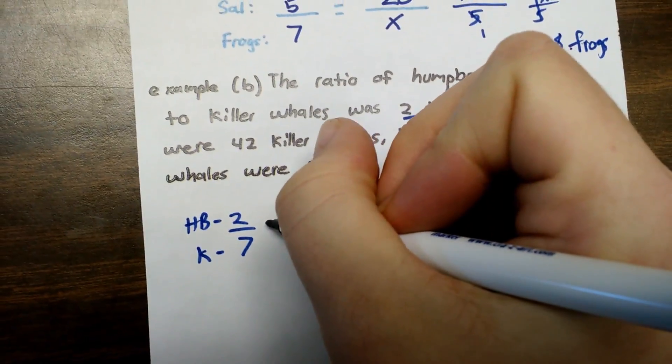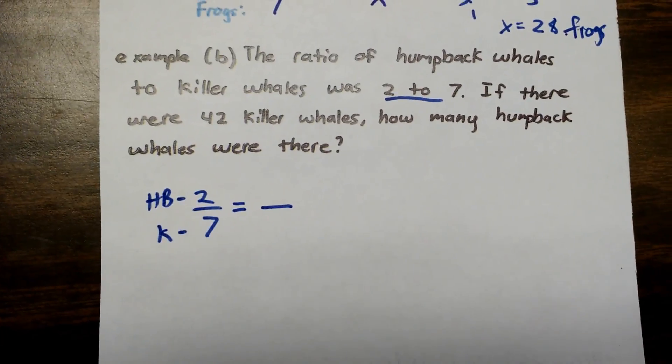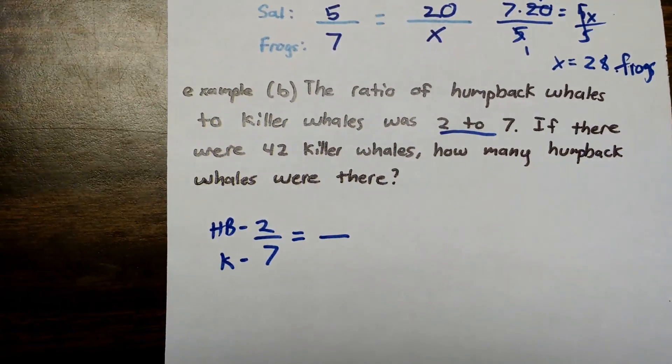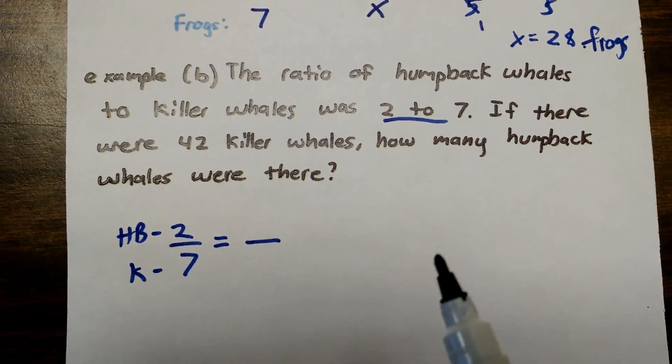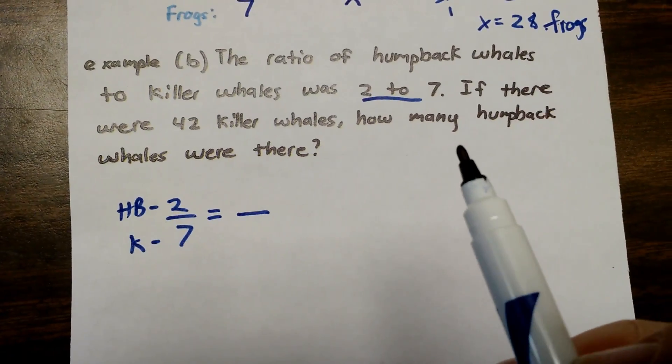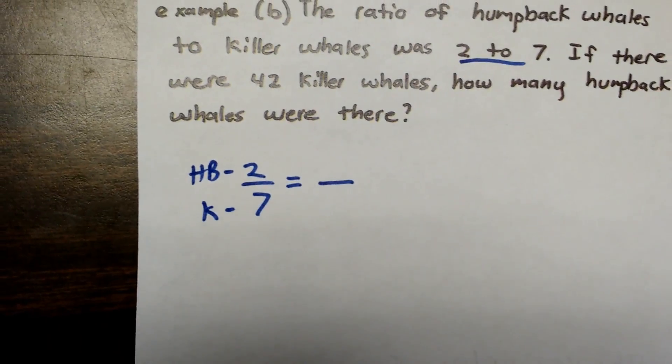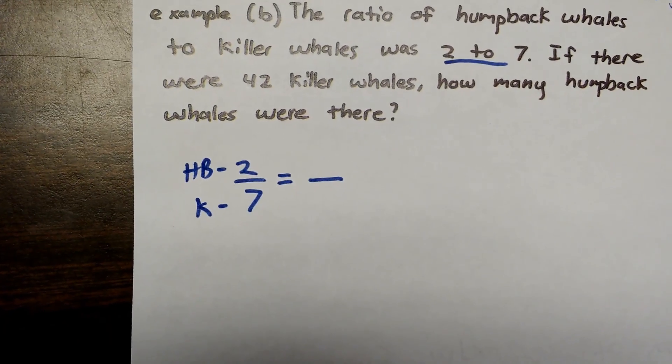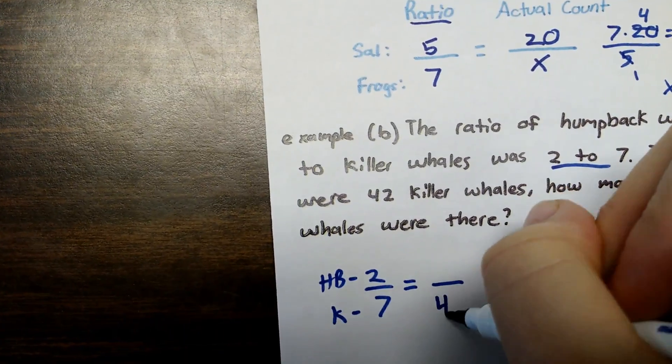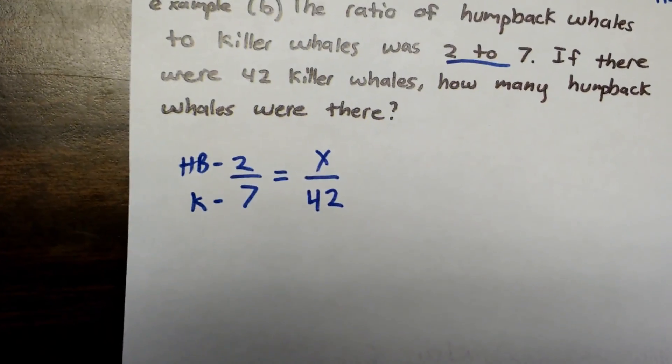So now I know that I'm going to do another ratio to compare to this ratio. And I want to look for what other information they tell me. If there were 42 killer whales, how many humpback whales were there? So 42 killer whales, is that going to go on the top or the bottom? It's going to go on the bottom because that's where our killer whales are. And I don't know the humpback whales. That's what I want to know.